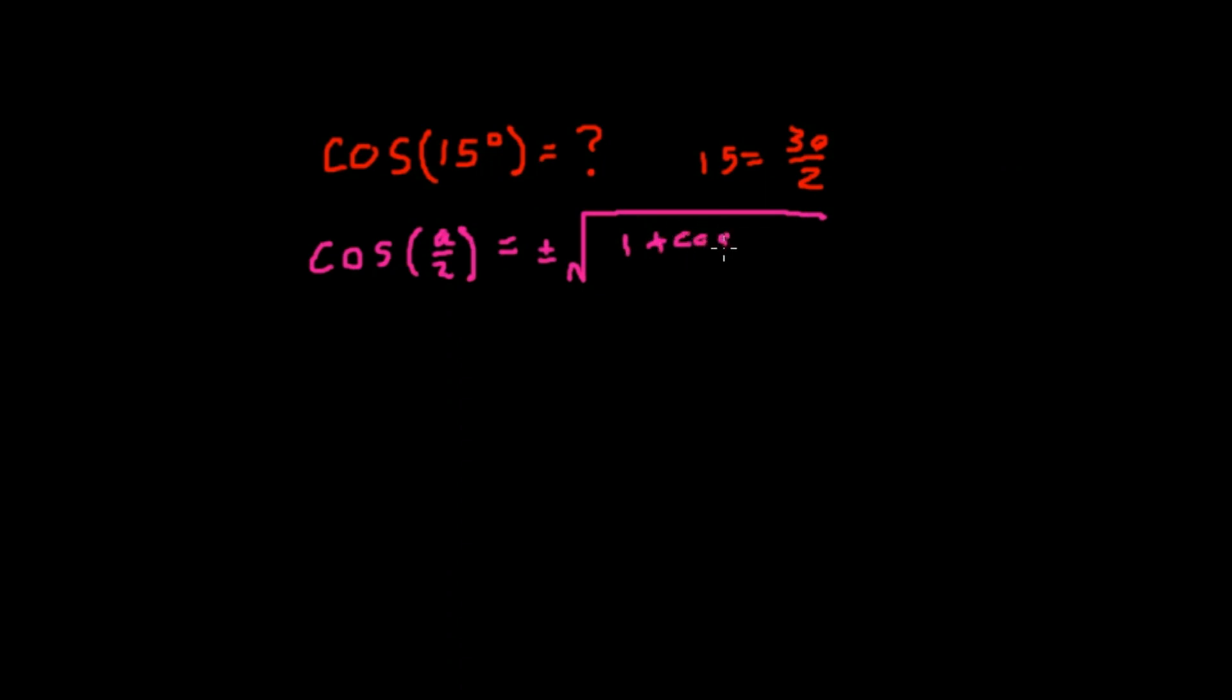More generally, the cosine of a/2 is the square root of (1 plus the cosine of a) divided by 2. We can just replace a with 30, and that's going to give us the cosine of 15.